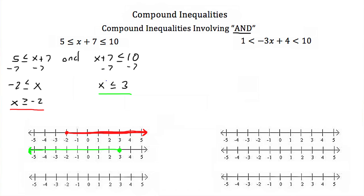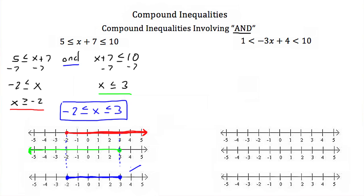Now to finish graphing this, we have two equations and the word AND in between them, which means our values of x have to satisfy both of these solutions. Our key points are negative 2 and 3. All the numbers between these two points will satisfy this equation. So we combine the two parts into one graph: a solid point at negative 2, a solid point at positive 3, and we shade everything in between. You can also write this as negative 2 is less than or equal to x, which is less than or equal to 3.